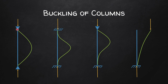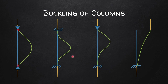For the both-ends-hinged case, the points of contraflexure are at the hinges themselves, since the curvature changes there and the bending moment at a hinge is zero. For the both-ends-fixed case, as I showed you, somewhere around the quarter points the radius of curvature changes from one side to the other — those two points are the points of contraflexure.